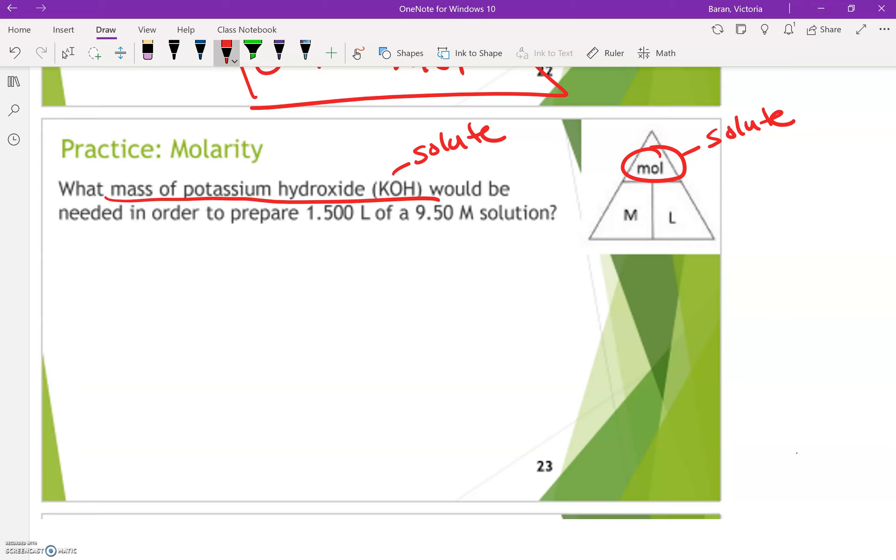So I'm going to find moles first, which I'm going to get from doing molarity times liters. And they already gave me that moles equals the molarity is 9.50 M and the liters is 1.500 liters.